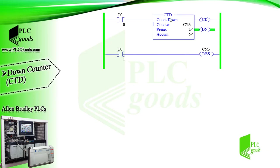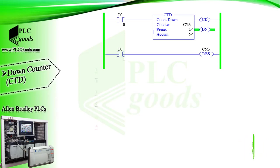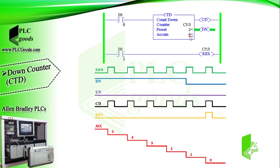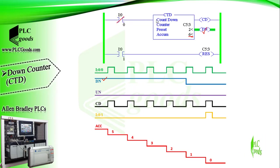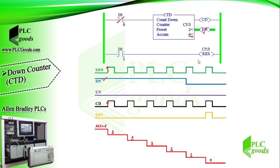Now we replace the up counter with a down counter to investigate CD, DN, and UN status bits and take a look at its counting chart. As you see, the accumulated value is 6 which is greater than the preset value, so the done bit is activated at the beginning. With each positive edge signal, the counting down bit of the inserted down counter is activated and the accumulated value decreased 1 unit. Similarly, with the next positive edge signal, the accumulated value will be decreased. When the value is lower than the preset value, the done bit will be turned off.